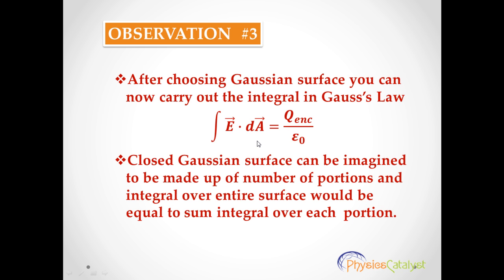Now you can imagine your closed Gaussian surface to be made up of a number of portions. The integral over entire surface would be equal to the sum of integral over each portion.